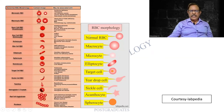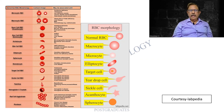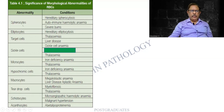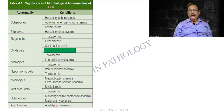This is an important slide — what are all the RBC morphological abnormalities? It may not be asked as a long question, but can be asked as an MCQ or in the viva. There can be macrocytes, microcytes, elliptocytes, target cells, teardrop cells, sickle cells, acanthocytes, etc. I have given the conditions where each is applicable. Kindly have an idea about each morphological abnormality and the associated conditions.